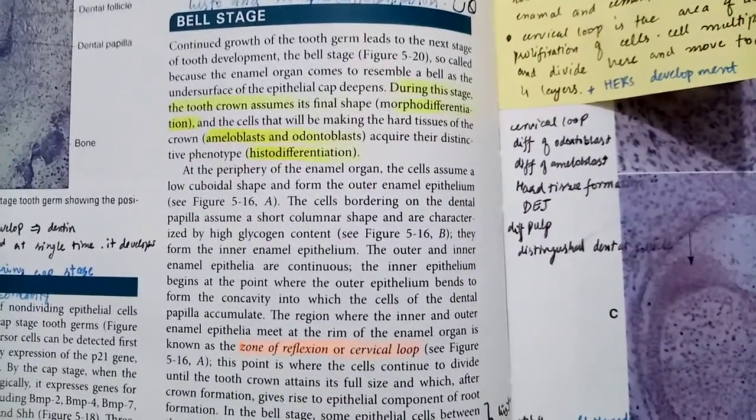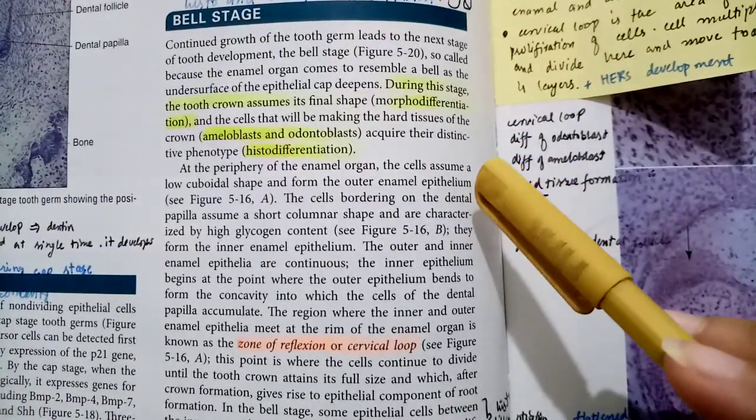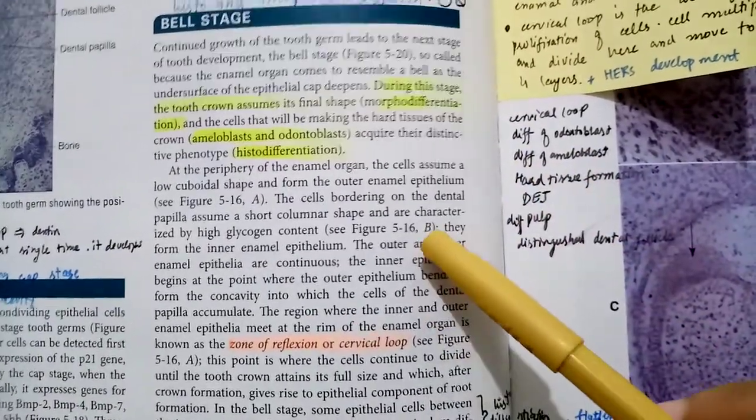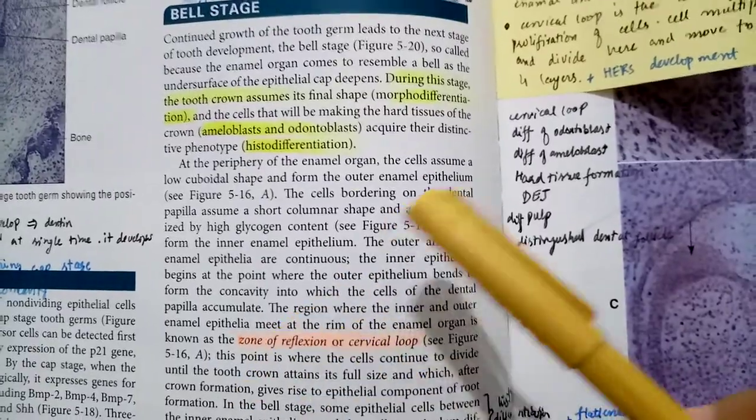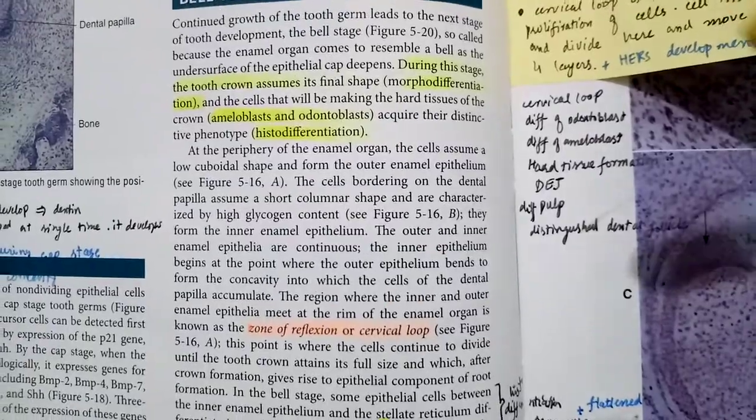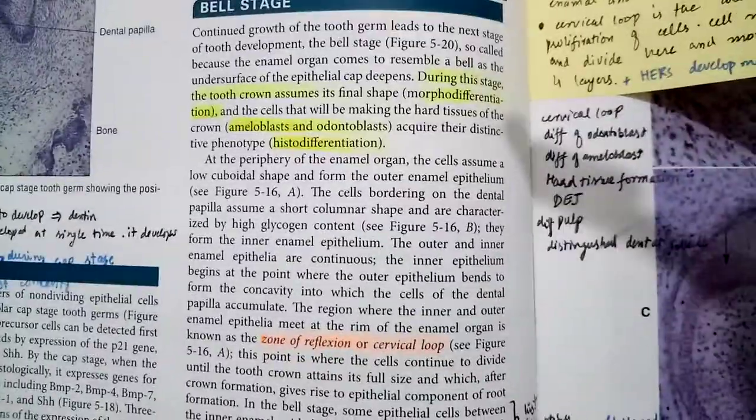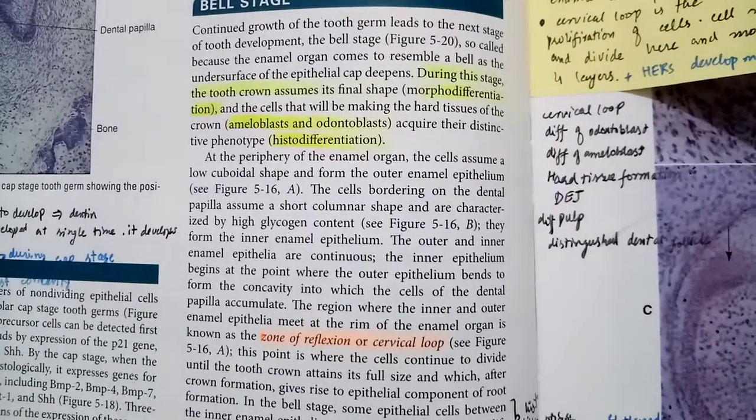In this stage, the crown assumes its final shape, so we call it morphodifferentiation. Histodifferentiation was in cap stage and late cap stage, but morphodifferentiation is complete in bell stage where its final shape is assumed.